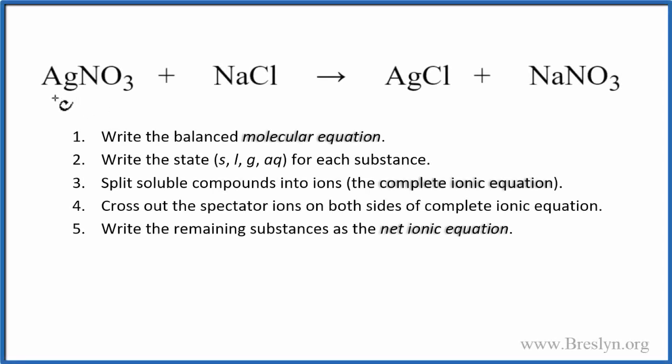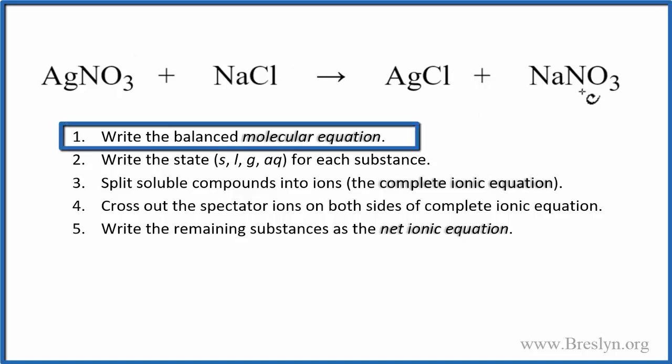To write the net ionic equation for AgNO3 plus NaCl, we'll use these rules here. So first thing, we need to balance the molecular equation. This is our molecular equation. Turns out this is already balanced. We don't need to do anything to this equation.